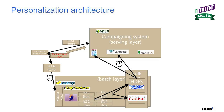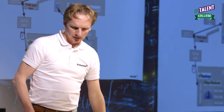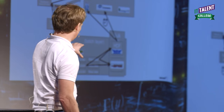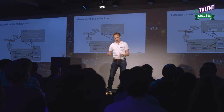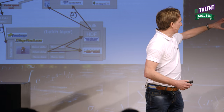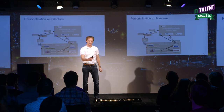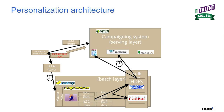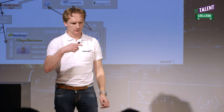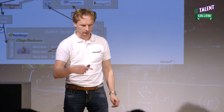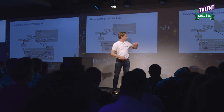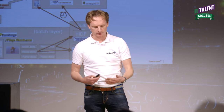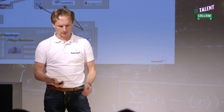We've decided to implement the Lambda architecture. The Lambda architecture consists of three layers: the batch layer at the bottom, which does all the number crunching — in our case using MapReduce on Hadoop; the serving layer, which is our campaigning system serving campaigns to the webshop; and the speed layer, which records all the things you do within a session. By combining the real-time component with all the batch processing done overnight, we want to give the customer the best possible experience.